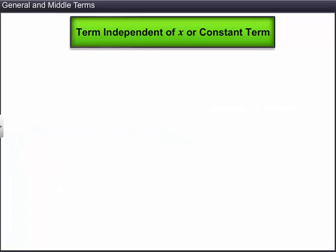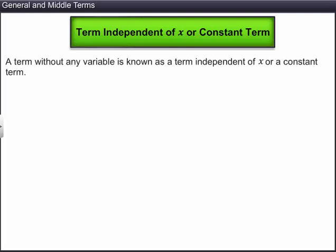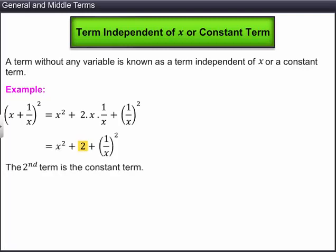Now, let us understand what is a term independent of x or a constant term in the expansion of a binomial. In a binomial expansion, a term that has no variable in it is known as a term independent of x or a constant term. In the expansion of x plus 1 upon x whole square, the second term is a constant with no variables in it. Here, 2 is the term independent of x or the constant term of the given expansion.